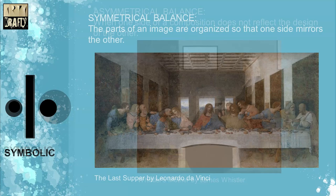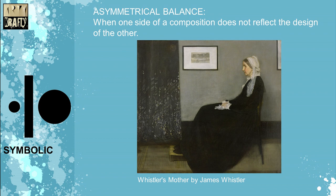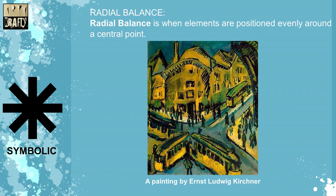The painting Last Supper by Leonardo da Vinci is an example of symmetrical balance. Asymmetrical balance is when one side of a composition does not reflect the design of the other. The painting Whistler's Mother is an example of asymmetrical balance. Radial balance is when elements are positioned evenly around a central point, as shown in a painting by Ernest Ludwig.